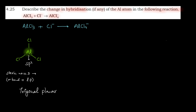Now let's check for AlCl4⁻. In this structure, aluminium has four bonds formed with chlorine. One Cl comes here, and another Cl is drawn. This bond shown here is towards the observer — meaning it is coming towards you. These two bonds are out of the plane, and the bonds drawn as straight single lines are in the plane.